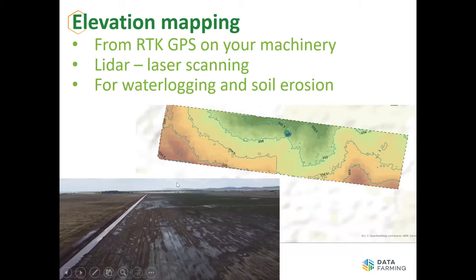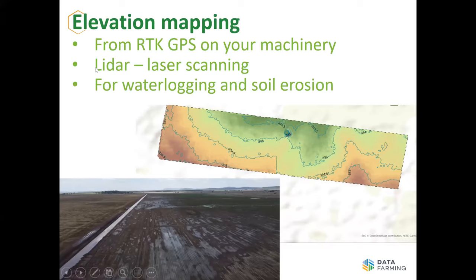Elevation mapping: if you've got an RTK GPS, every time you travel across the field you're collecting elevation maps, and a lot of people don't realise that. This is a client who has a waterlogging problem along their northern boundary — you can see where the contour lines meet that boundary, basically a big swamp in there, and he's actively fixing that up. It's a really good layer to start with because it often reflects soil type differences as well. On the Darling Downs, there's a lot of LIDAR being captured — an airborne laser scanner that picks up elevations at one metre by one metre pixel resolution. A lot of the Darling Downs is already captured by LIDAR, and growers out west are getting LIDAR flowing over their properties for a few dollars a hectare — really good for water planning.